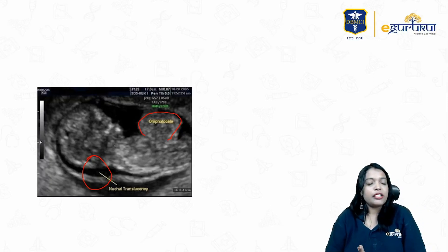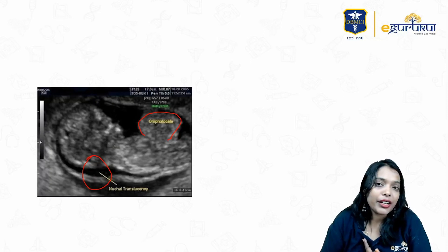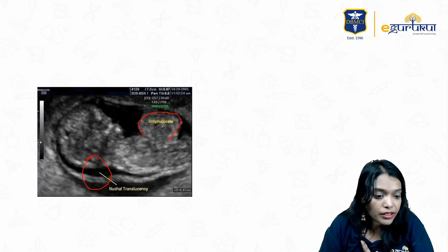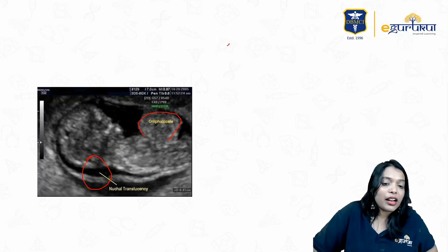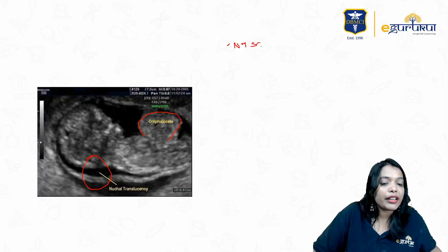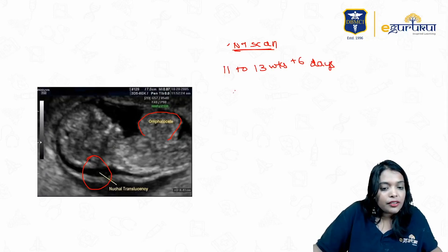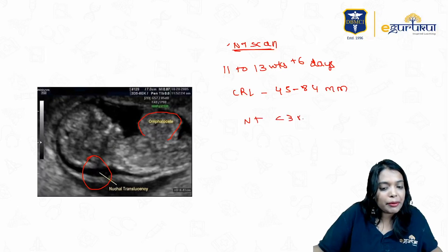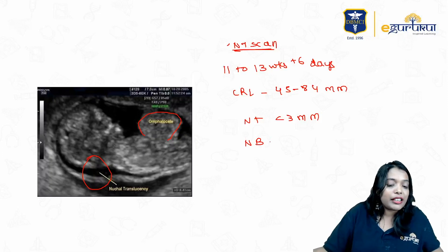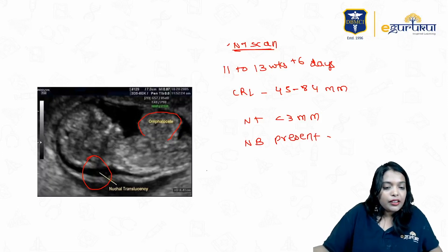These cases are probably associated with other anomalies because of the increased nuchal translucency. The NT scan is important — it is usually done between 11 to 14 weeks, specifically 13 weeks plus 6 days, when the crown-rump length is between 45 to 84mm. NT should be less than 3mm to call it normal.